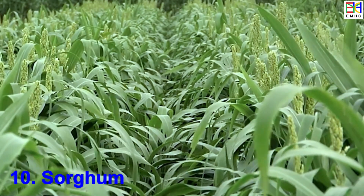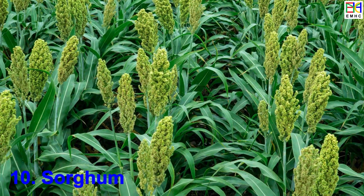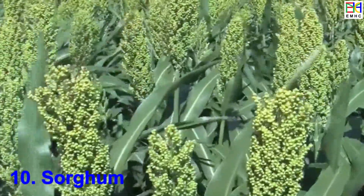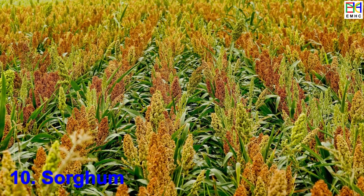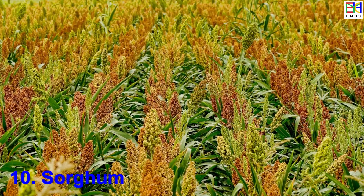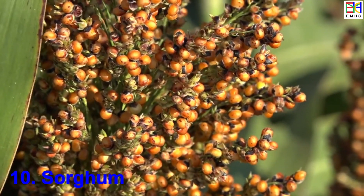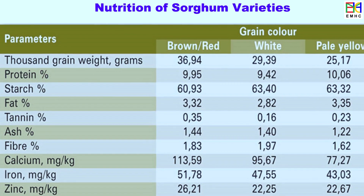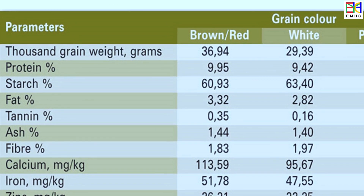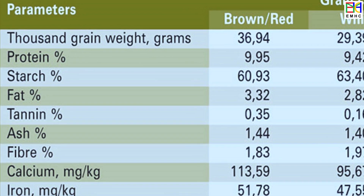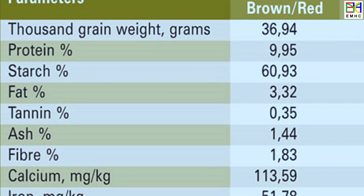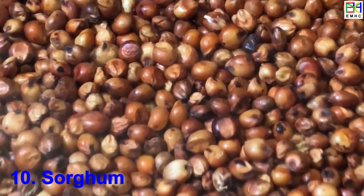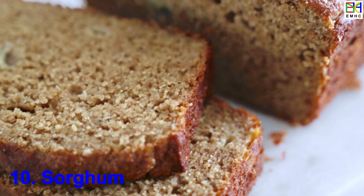Sorghum is believed to have originated in Africa thousands of years ago, and has spread to various regions worldwide. The largest producers of sorghum today include the United States, Nigeria, India, Mexico, and Sudan. Global production exceeds 60 million metric tons annually. Sorghum is a nutrient-rich grain that is gluten-free and high in dietary fiber. It contains essential minerals such as iron, phosphorus, and potassium, and also provides B vitamins, antioxidants, and proteins.